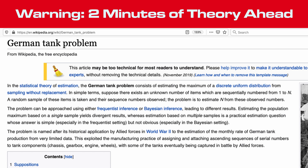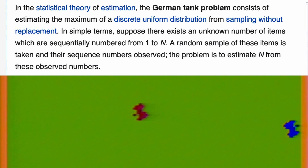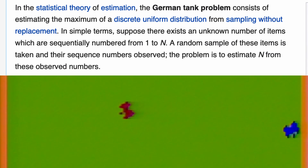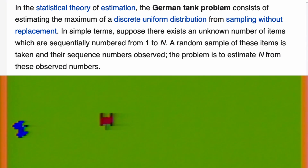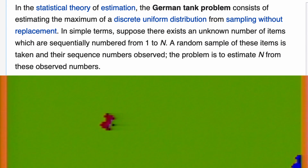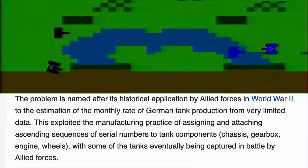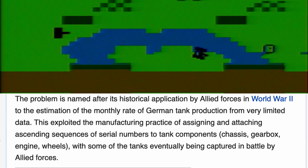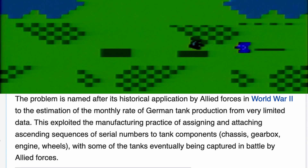He used something called the German tank problem to estimate the total number of Commodore 64s. Wikipedia says, in the statistical theory of estimation, the German tank problem consists of estimating the maximum of a discrete uniform distribution from sampling without replacement. In simple terms, suppose there exists an unknown number of items which are sequentially numbered from 1 to n. A random sample of these items is taken and their sequence numbers observed. The problem is to estimate n from these observed numbers. The problem is named after its historical application by Allied forces in World War II to the estimation of the monthly rate of German tank production from very limited data. This exploited the manufacturing practice of assigning ascending sequences of serial numbers to tank components, with some of the tanks eventually being captured in battle by Allied forces.